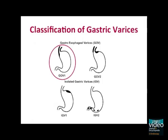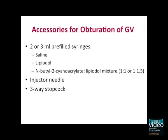The principle of variceal obturation is essentially simple and is similar to conventional sclerotherapy. Tissue adhesives, such as N-butyl-2-cyanoacrylate, or cyanoacrylate for short, are preferred over the usual sclerosant because of their rapid polymerization on contact with blood or living tissue. N-butyl-2-cyanoacrylate is commonly used in Europe and Asia but is not available in the United States. However, a similar agent, 2-octyl-cyanoacrylate, has been approved by the FDA for skin closure and has also been used for the management of gastric varices.